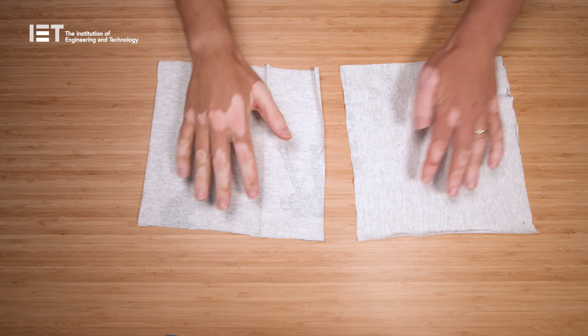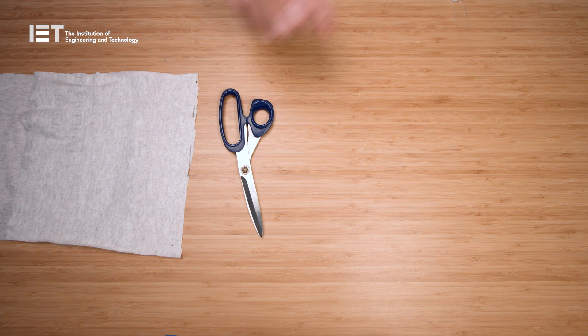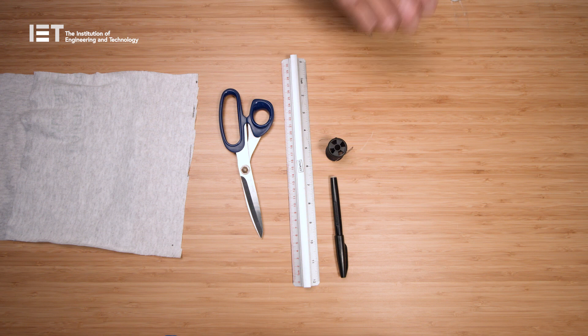To make this mask you will need the following: two 25cm x 25cm square pieces of fabric, a sharp pair of scissors, a ruler, a pen that can write on cloth, a needle and thread, and two 20cm pieces of elastic.